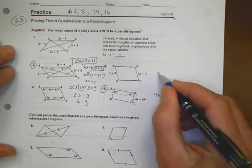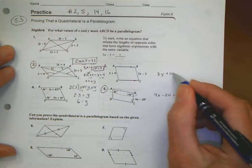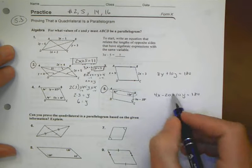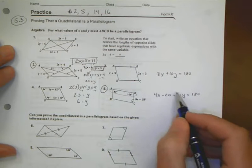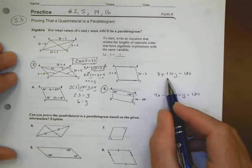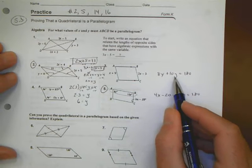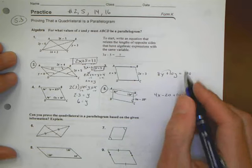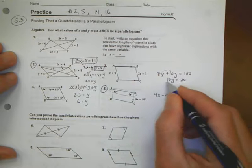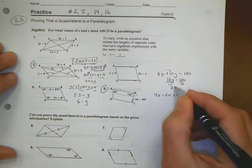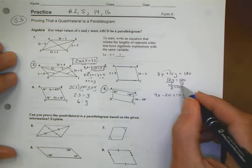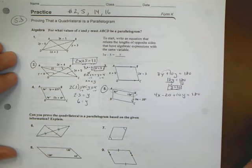But I can also look here and notice that I have 8y plus 10y is also equal to 180. When I look at the two equations and decide which one is easier to solve, I would say this one is because I only have one variable. When I combine like terms, 8y plus 10y is 18y equals 180. Divide both sides by 18, and y ends up equaling 10.